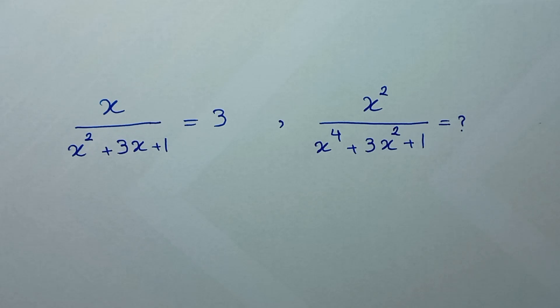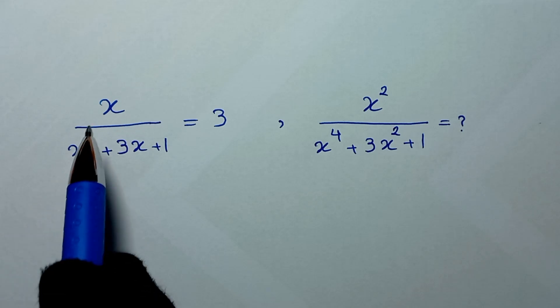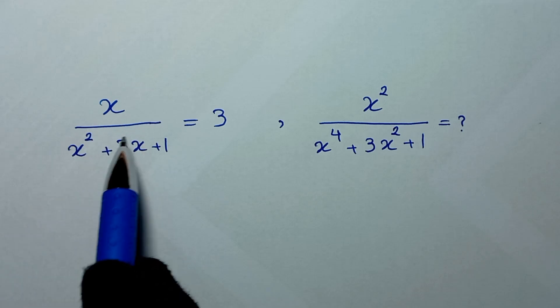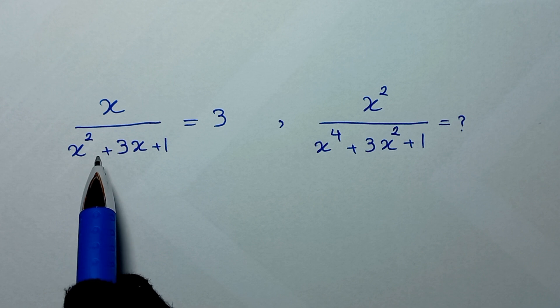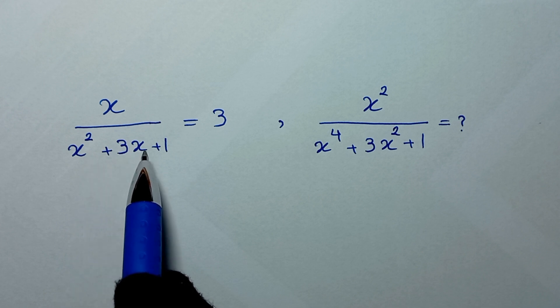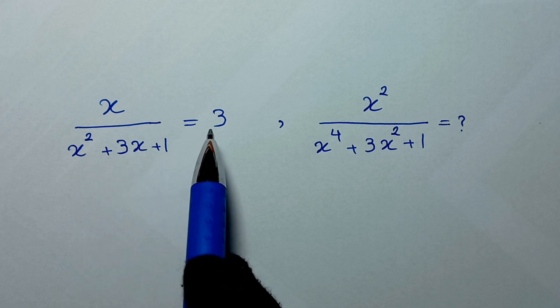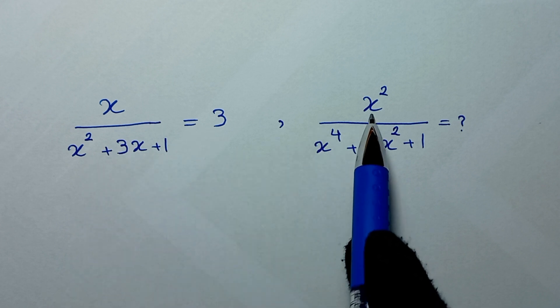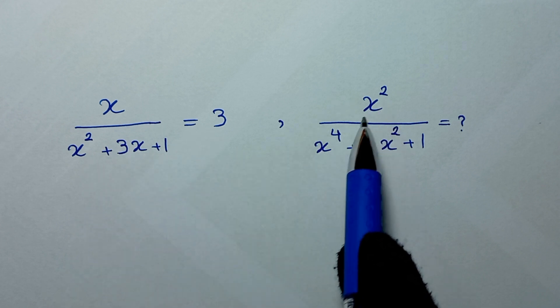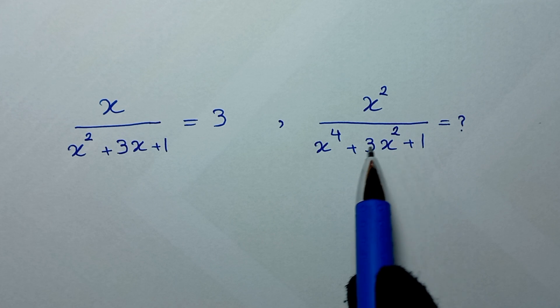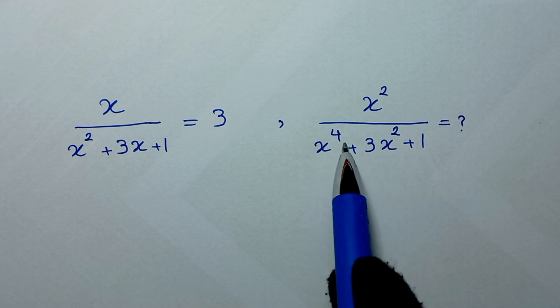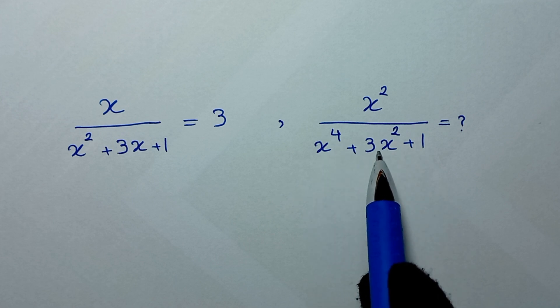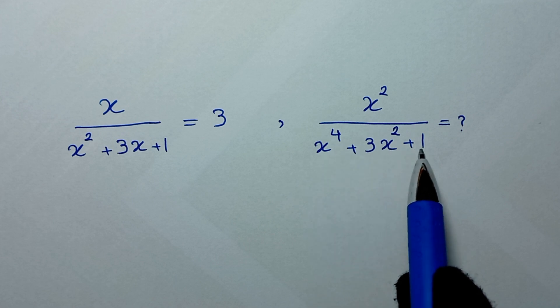Hello my friends, you're welcome to solve this math problem: x over x squared plus 3x plus 1 is equal to 3. Find the value of x squared over x to the power of 4 plus 3x squared plus 1.